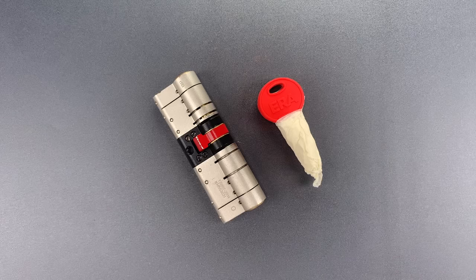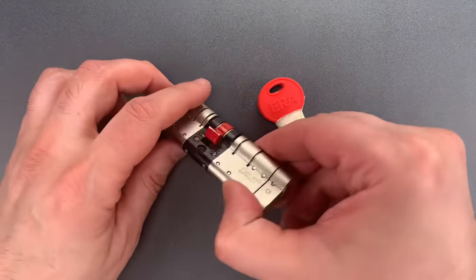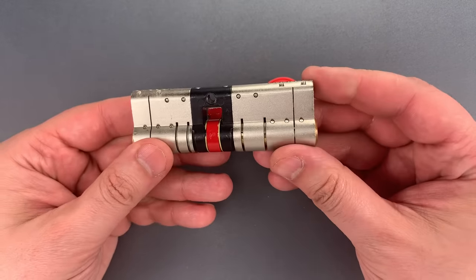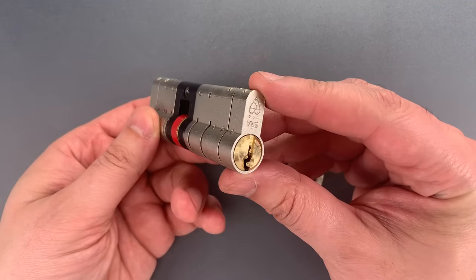This is the Lockpicking Lawyer, and what I have for you today is an ERA brand Fortress Europrofile cylinder that was sent to me by Calvin in the UK.